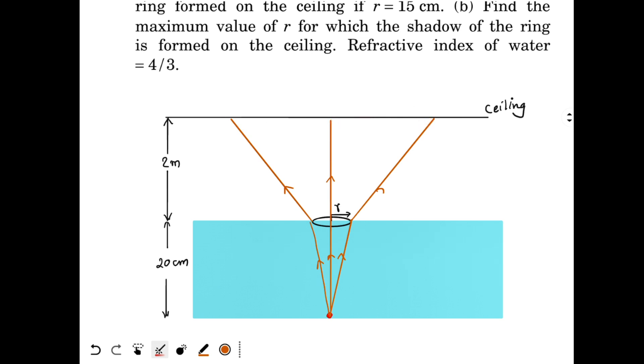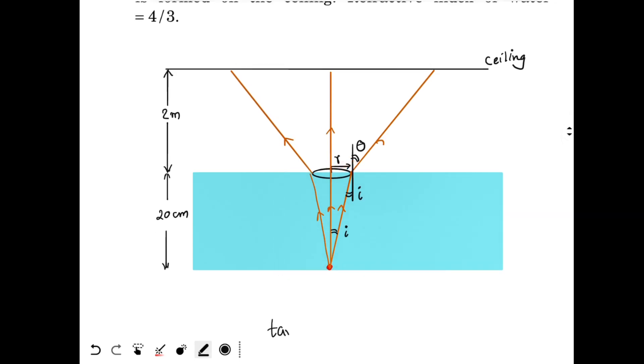First of all let's look at the angle of incidence and angle of refraction. So I draw the normal over here. This is angle of incidence I. This is angle of refraction. Let's call it theta because r is already used. So first of all I need to calculate I. This angle will also be I. So what is tan of I equal to according to this triangle? Radius by height of the water surface.